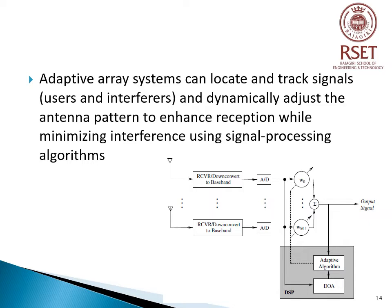Adaptive array systems can locate and track signals and dynamically adjust the pattern to enhance reception while minimizing interference using signal processing algorithms. A functional block diagram of such a system is shown in figure. After the system down-converts the received signals to baseband and digitizes them, it locates the Signal of Interest (SOI) using a Direction of Arrival (DOA) algorithm, and continuously tracks SOI and signal not of interest by dynamically changing the weights. The DOA computes direction of arrival of all signals from time delays between antenna elements, and the adaptive algorithm uses a cost function to compute appropriate weights resulting in an optimum radiation pattern.